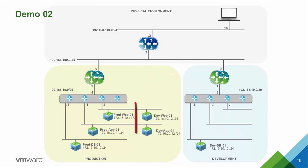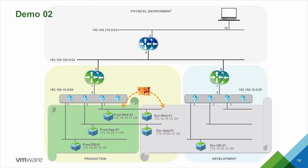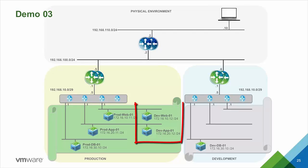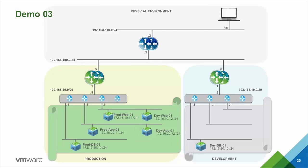On the second demo we will move some development VMs to production subnets, but we will keep them isolated by means of the NSX distributed firewall. On the third demo we will see how to modify the security policies that apply to the development VMs so that they can communicate with the production VMs — and we will see how we can do this without modifying any IP addressing or switch connectivity.